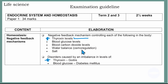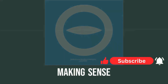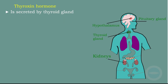So without wasting more time, let's get to it. First of all, I would like to explain what the thyroxine hormone is. Thyroxine hormone is secreted by the thyroid gland. The thyroid gland is found at the neck — this butterfly structure here — and it's called the thyroid gland.